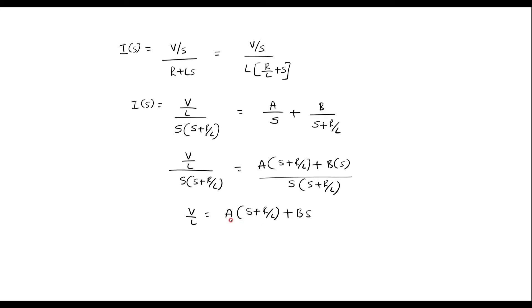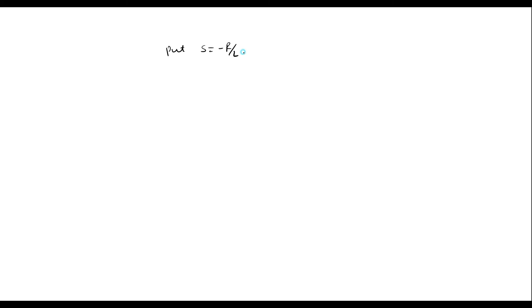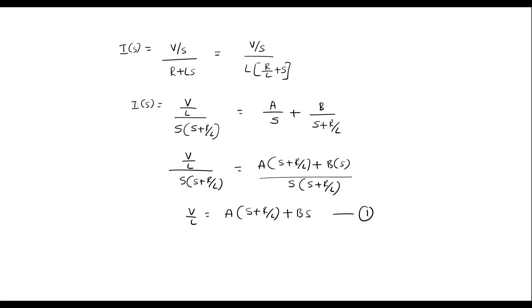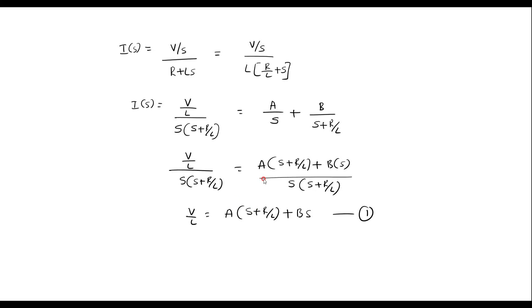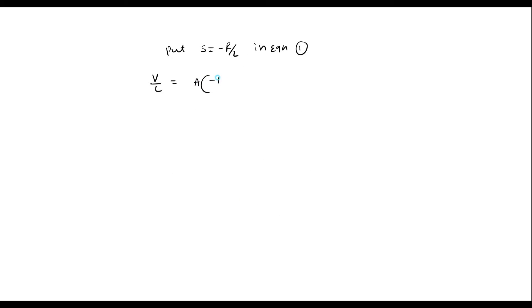Now let us calculate constants A and B. To find B, substitute S equal to minus R by L into the equation. The LHS gives V by L. On the RHS, A times the quantity minus R by L plus R by L becomes 0, leaving V by L equal to B times minus R by L. Therefore B is equal to minus V by R.